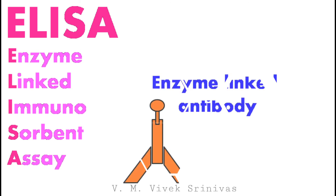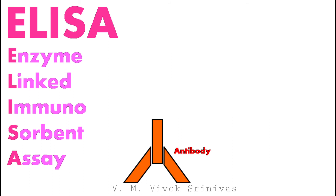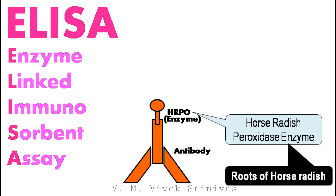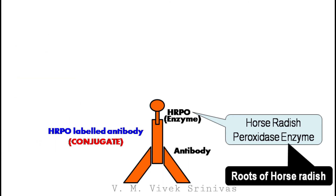In ELISA, the most important component used is enzyme-labeled or linked antibody. They are nothing but antibodies which are linked to an enzyme, mostly HRPO enzyme, that is horseradish peroxidase enzyme, which is isolated from the roots of horseradish. They are generally termed as conjugate, since they are conjugated to an enzyme.